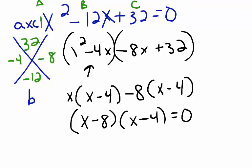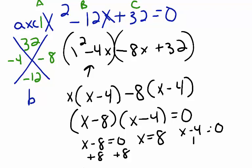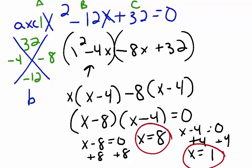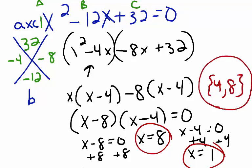To solve for x, I'll use the zero product property. x minus 8 equals 0 — add 8 to both sides — so x equals 8. Then x minus 4 equals 0 — add 4 to both sides — so x equals 4. Here are my two solutions. My solution set is {4, 8}. So we've solved this problem. I hope you found it helpful, and we'll see you next time.